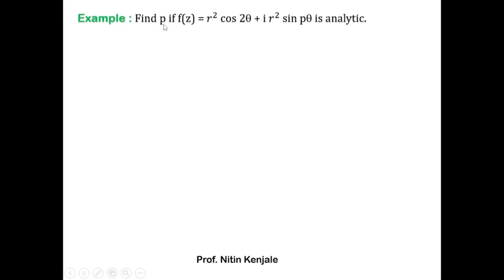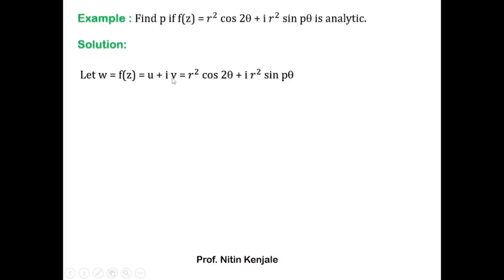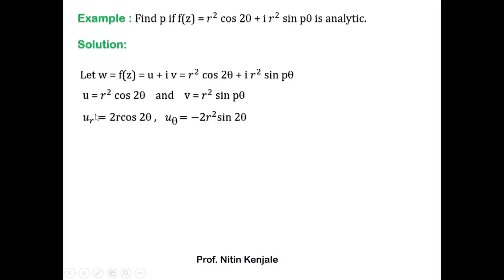Now we see an example. The question is to find the unknown variable p if the function of a complex variable f is given by r²cos(2θ) + i·r²sin(pθ), and it is analytic. Comparing with u + iv, we get u = r²cos(2θ) and v = r²sin(pθ). Differentiating: ∂u/∂r = 2r·cos(2θ), ∂u/∂θ = -2r²·sin(2θ), ∂v/∂r = 2r·sin(pθ), and ∂v/∂θ = p·r²·cos(pθ).